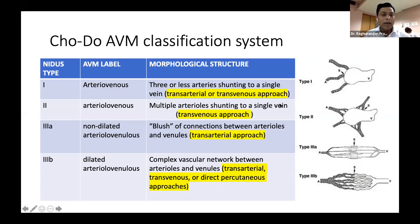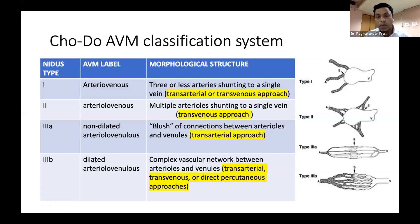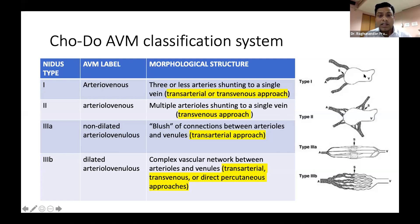In the CODO classification, type 1 has one arterial feeder or up to three, draining into a single vein — for these lesions, both transarterial and transvenous approaches can be used. Type 2 lesions have multiple arterioles communicating with a single vein. The transvenous approach is best here, because the arterioles are quite small in diameter and it's very difficult to deposit embolic material into them — so it's better to treat these lesions via a transvenous approach.